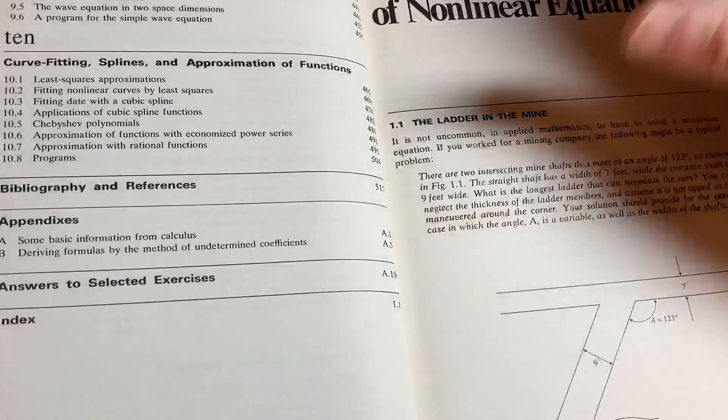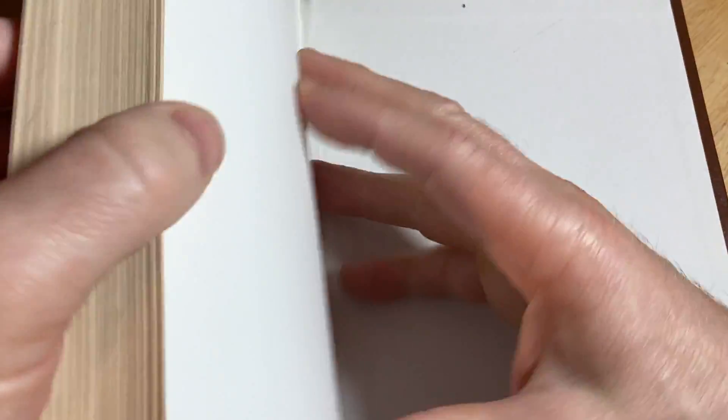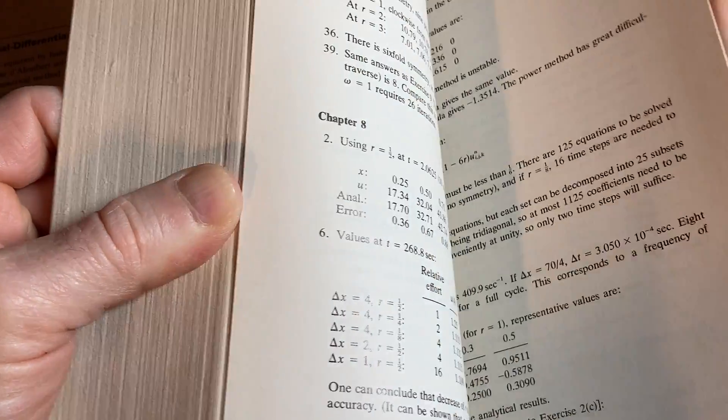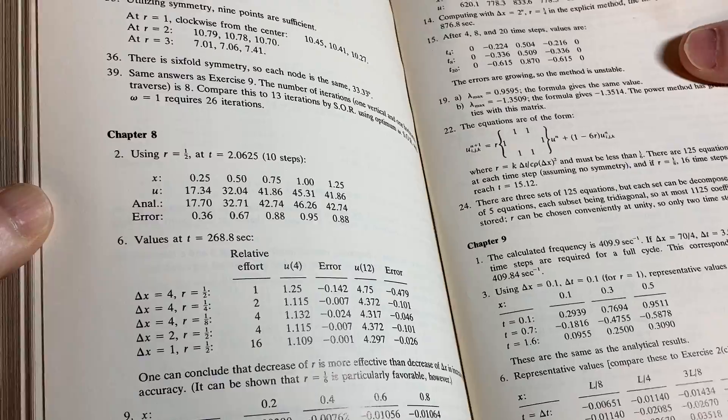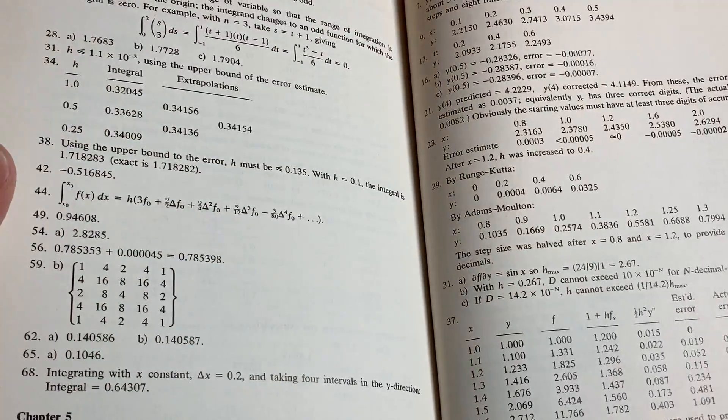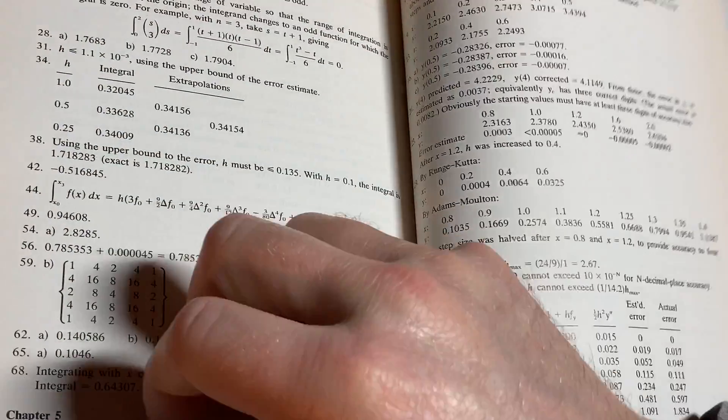You have some answers here. Let's look at the answers. See how they do with answers. It says answers to selected exercises. So some, certainly not all. So you do get some answers in the back of the book which is better than nothing. I mean some books have no answers. So that is something.